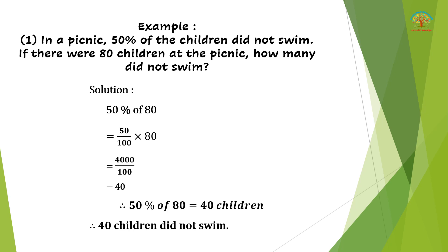Word problem: At a picnic, 50% of the children did not swim. If there were 80 children at the picnic, how many did not swim? We know 50% means 50/100. So 50/100 × 80 = 4000/100 = 40. Therefore, 40 children did not swim.